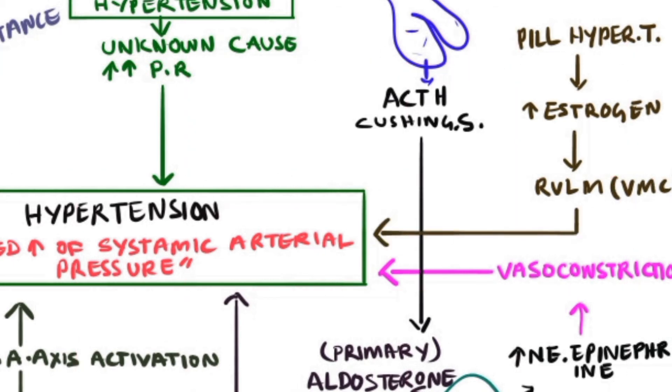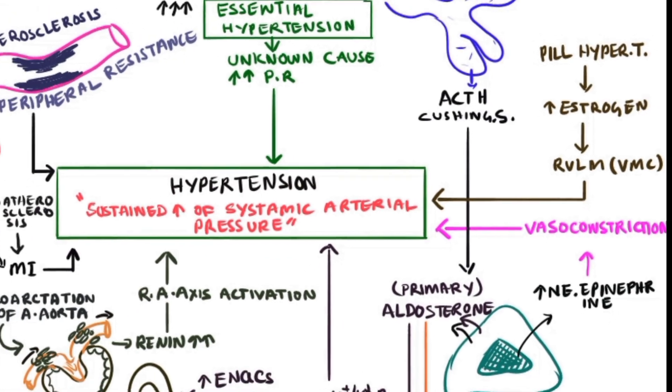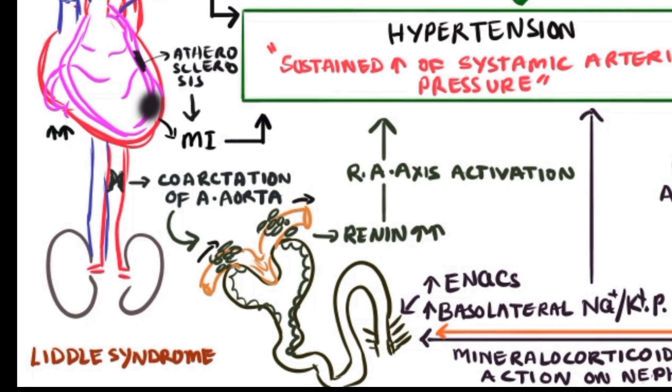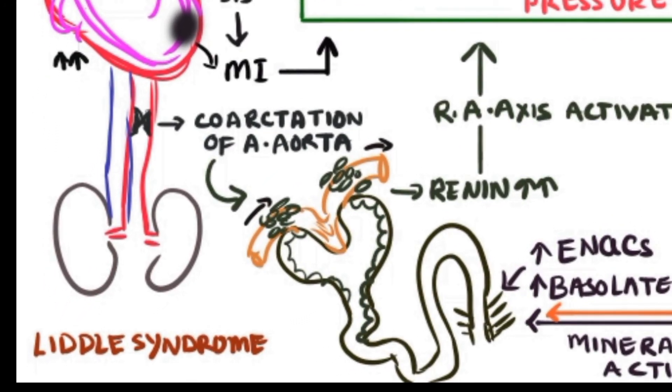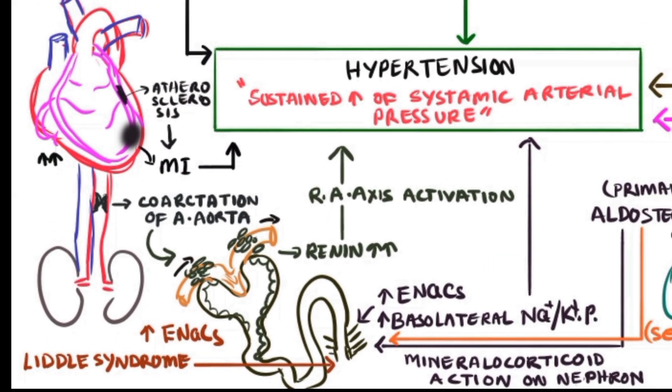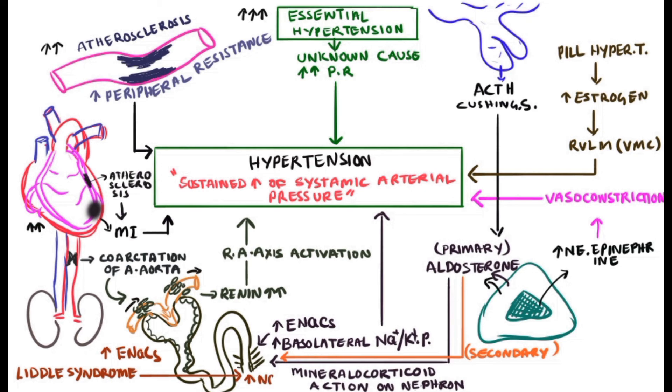Lastly, Liddle syndrome is a genetic disorder where the epithelial sodium channel activity becomes very excessive because of abnormal mutation of the alpha or gamma subunit of the epithelial sodium channels. This further leads to excessive retention of sodium into the blood, causing hypertension. These are all the basic pathophysiological causes or basis of hypertension.